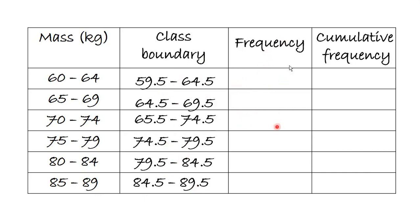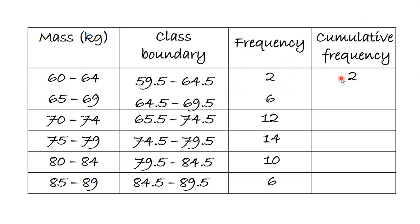The frequencies given are 2, 6, 12, 14, 10, and 6. We use these to get the cumulative frequency by accumulating: the first is 2, then 2 plus 6 gives 8, then 8 plus 12 gives 20, then 20 plus 14 gives 34, then 34 plus 10 gives 44, and finally 44 plus 6 gives 50. We have finished forming the cumulative frequency table.